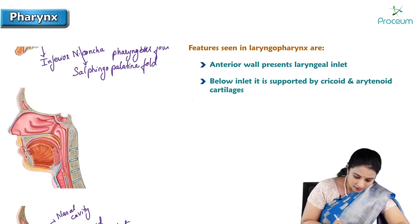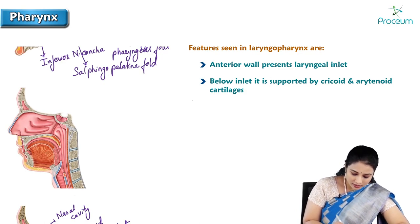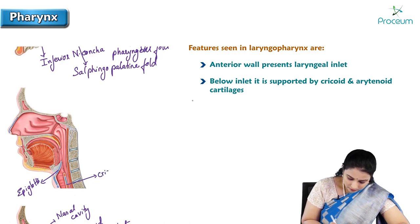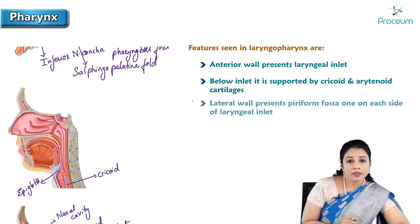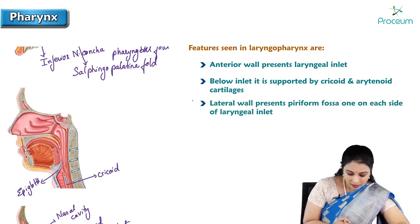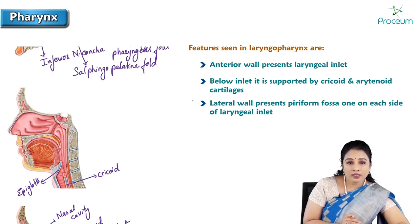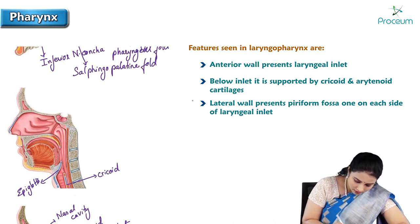The laryngopharynx extends from the upper border of the epiglottis till the lower border of the cricoid cartilage. Behind the larynx, the pharyngeal part is called the laryngopharynx. The anterior wall is formed by the inlet of the larynx — here is the inlet.